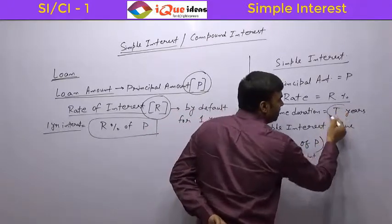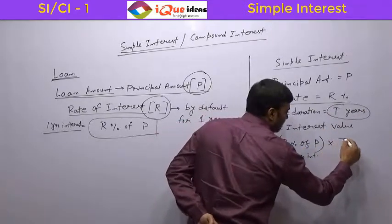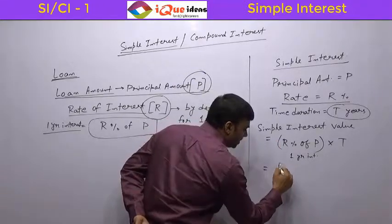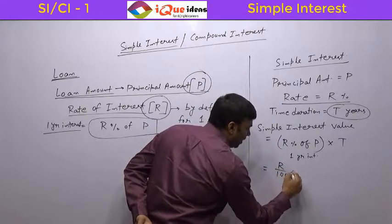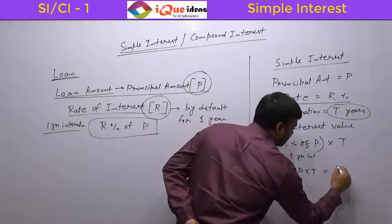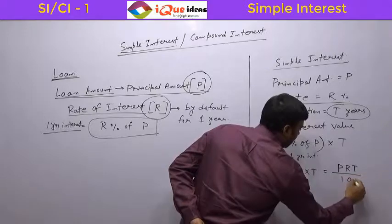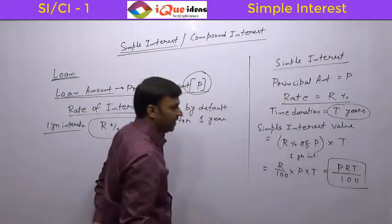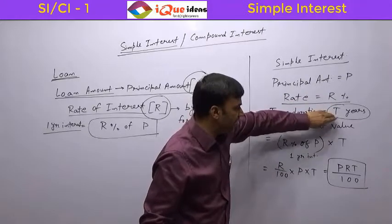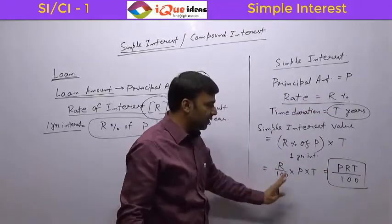The total time is T years. For one year the interest is R percent of P, so multiply by T to get the total interest. R percent means R upon 100, so simple interest equals R/100 × P × T. Eventually this formula becomes PRT upon 100. So the value of simple interest on principal P at rate R percent for T years is PRT/100.